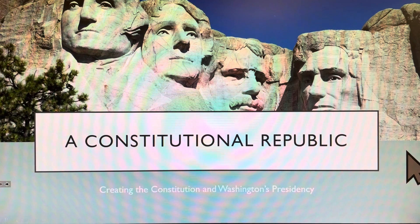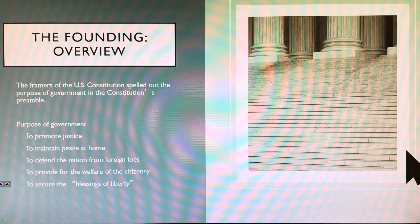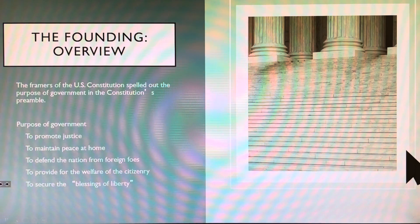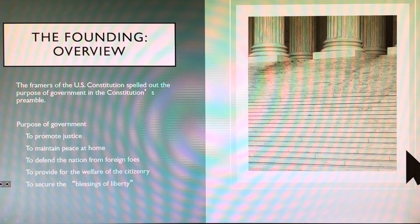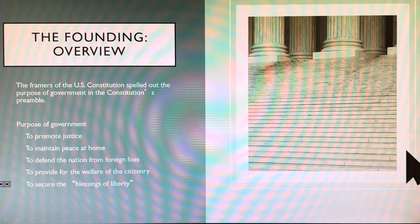So what we're going to talk about today is the creation of our Constitutional Republic. We ended our last unit with the Articles of Confederation, and the ultimate crisis that came out of it was Shays' Rebellion. Shays' Rebellion is our ultimate failure — we can't put it down. So we're going to get together, have a new convention, first aiming to fix the Articles of Confederation, but that's not going to work. So we're going to write a whole new document.